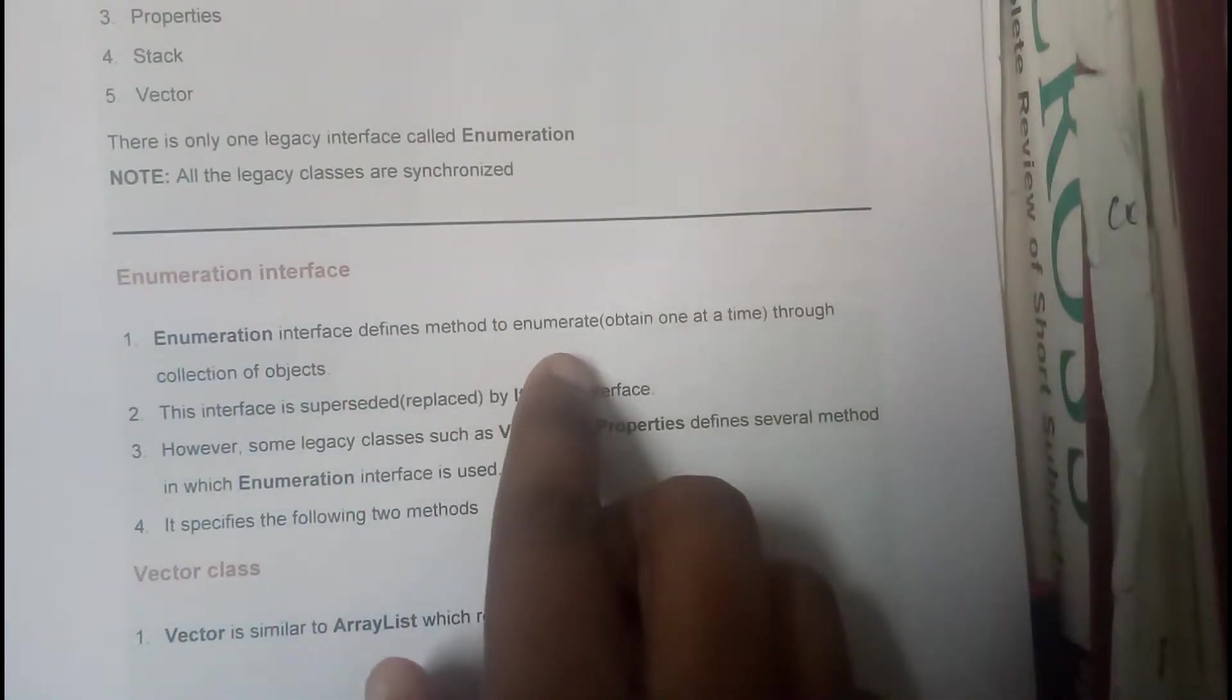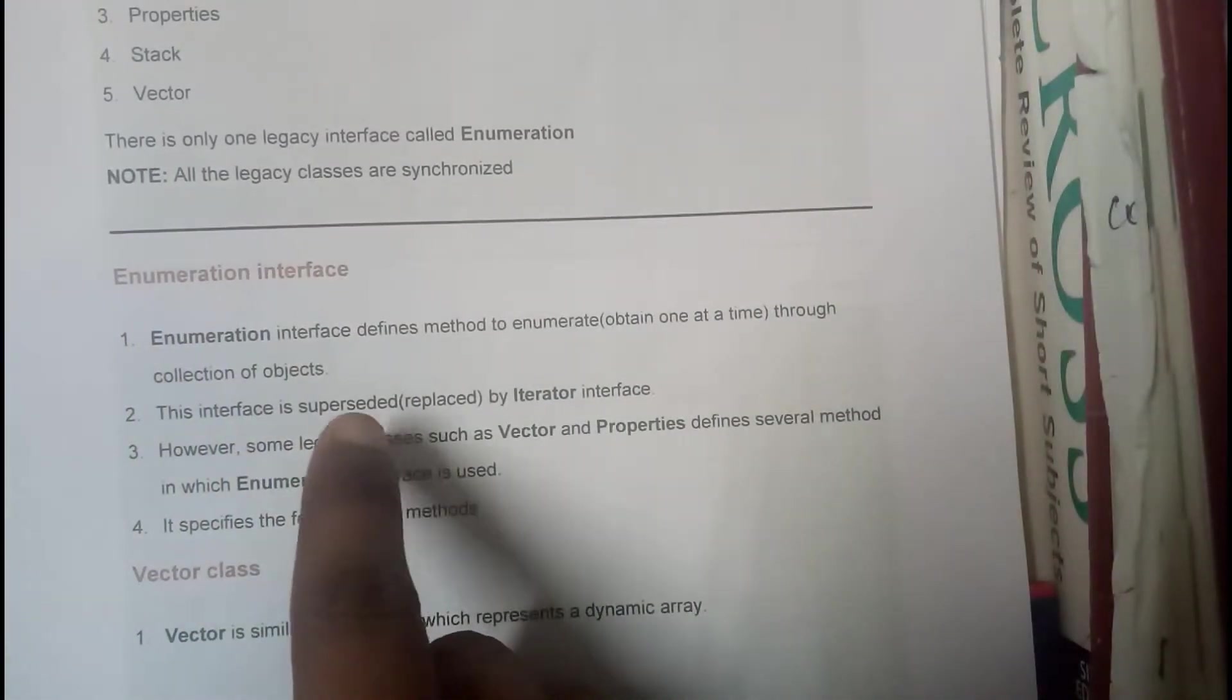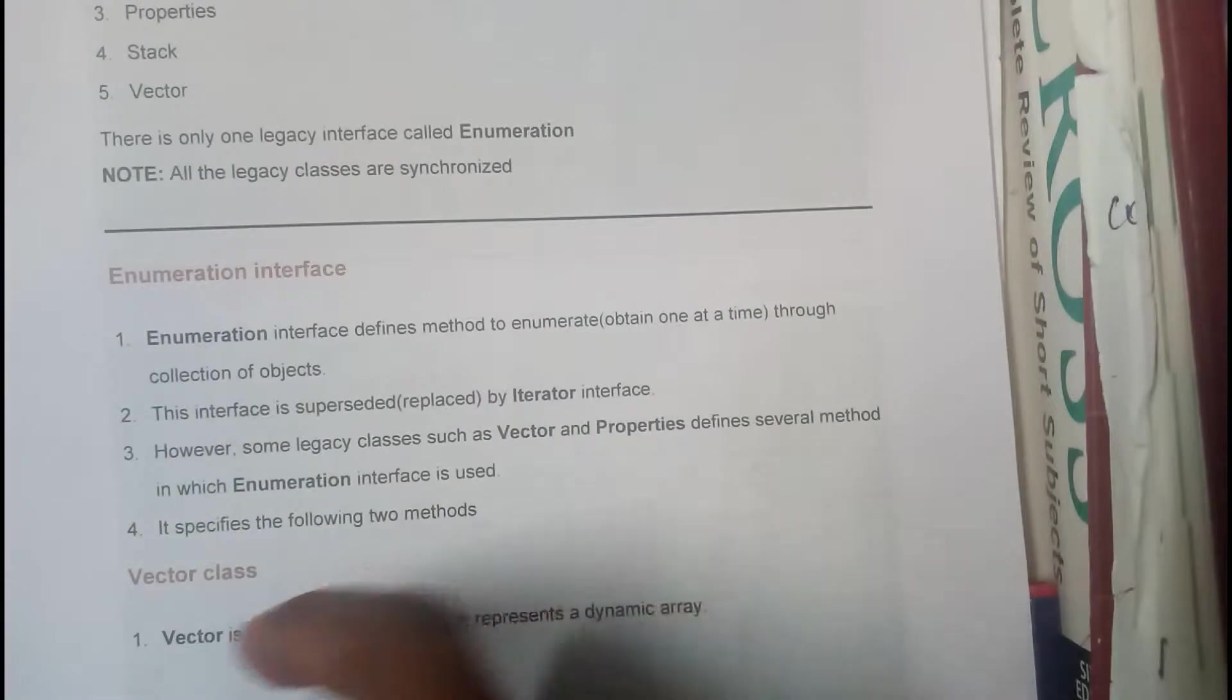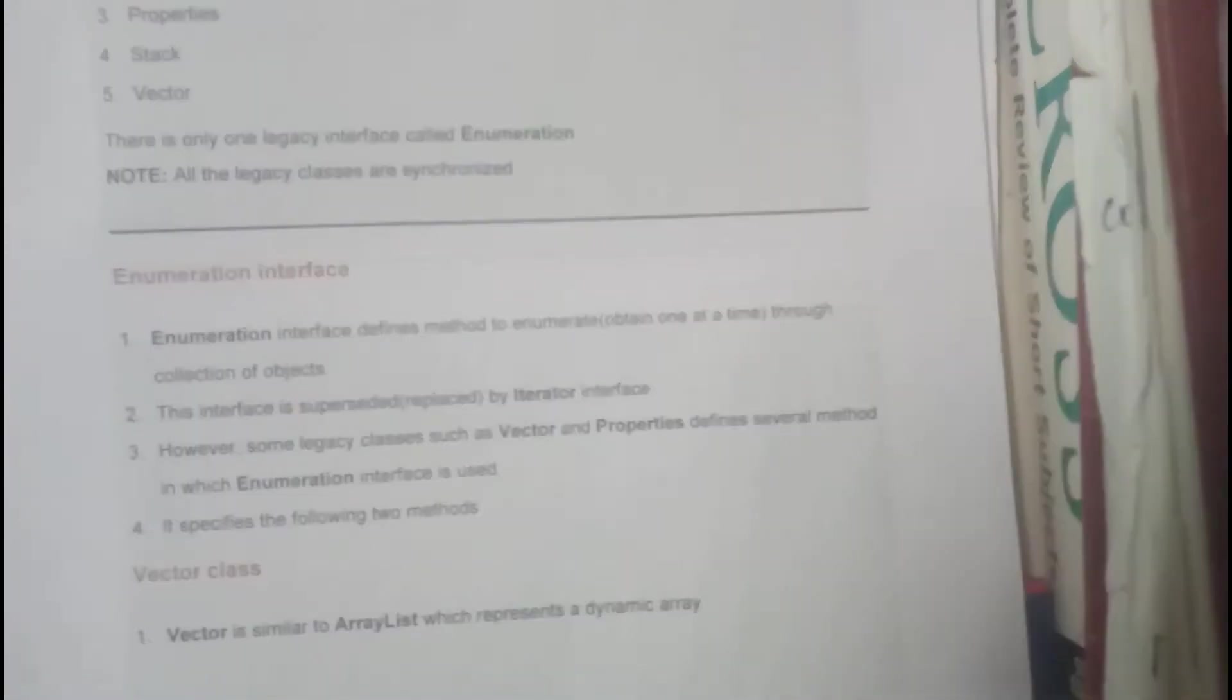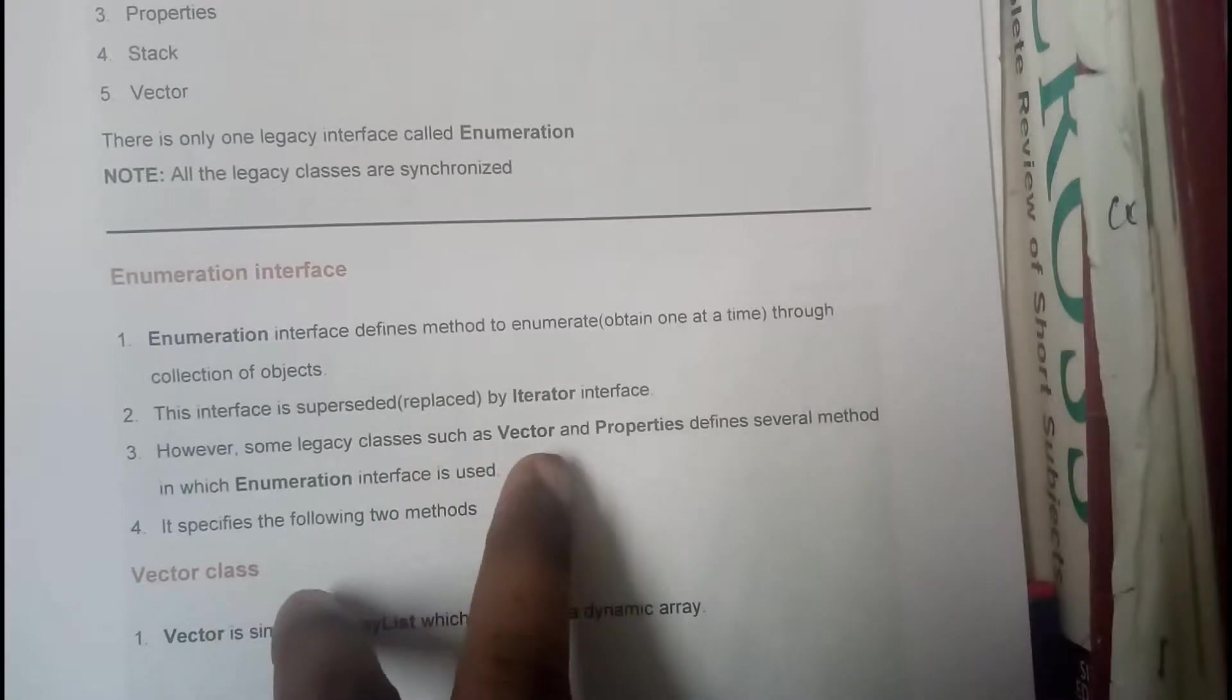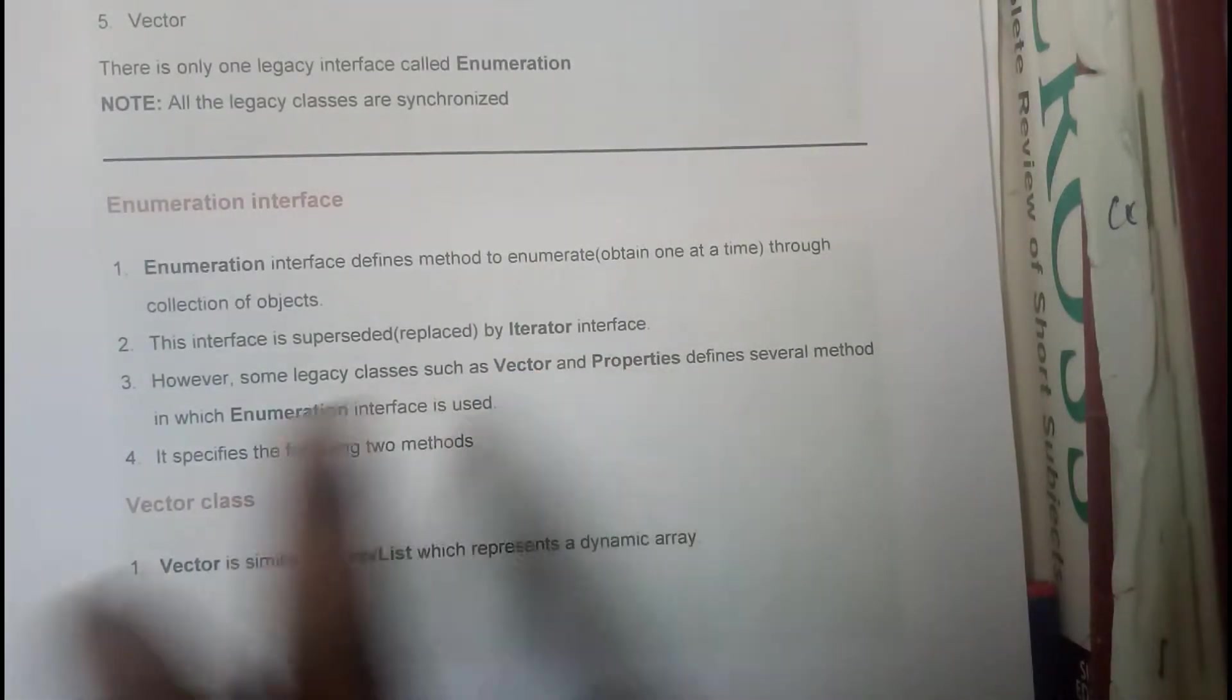Enumeration interface is defined as a method to enumerate, to obtain one at a time through the collection object. This interface is superseded or replaced by iterator interface. Basically we use iterator interface to travel in an array, list, or hash set, but in this situation we will be using enumerator. However, some legacy classes such as vector and property define several methods in which enumerator interface is used.